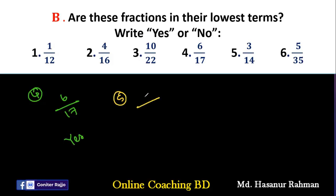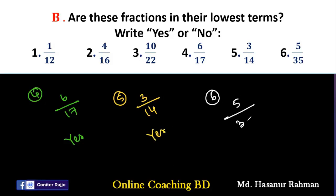Number 5 says 3/14. We can say 3 is already a prime number and we don't find any common factor of 3 and 14, so this is already in its lowest term — answer is yes. Number 6 says 5/35. Here 5 and 35 both have unit digit 5, so we can divide both numbers by 5, giving 1/7. So the answer is no.